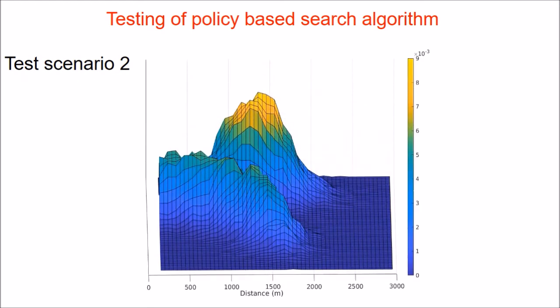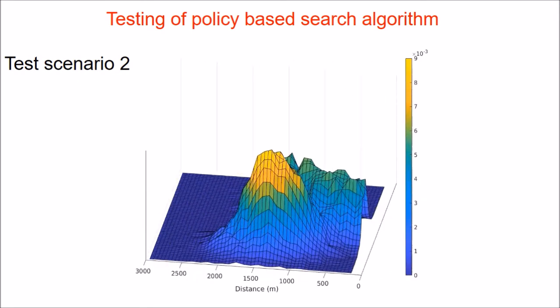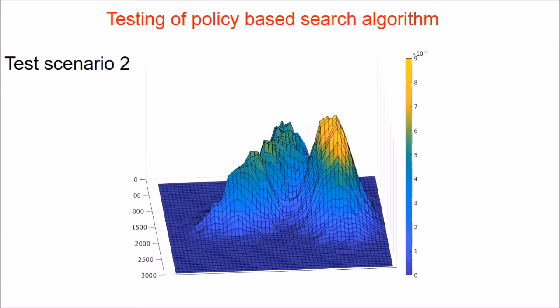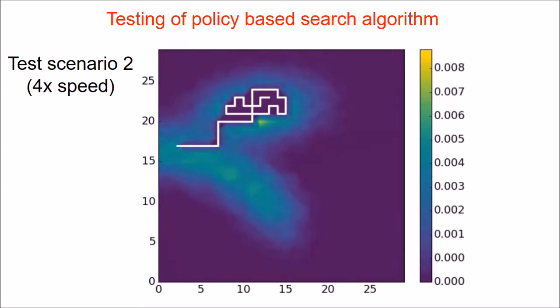The second test scenario is presented here. This distribution cannot be represented as a mixture of a few Gaussians. As it can be noticed, despite the dissimilarity between the testing scenario and the training scenario, the policy-based search algorithm is capable of performing high-rewarding actions.